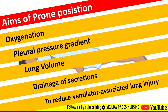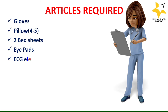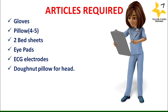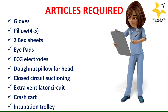Articles required for prone positioning include: gloves, four to five pillows, two bed sheets, eye pads, ECG electrodes, donut pillow, forehead pad, closed circuit suctioning, extra ventilator circuit, crash cart, and intubation trolley.